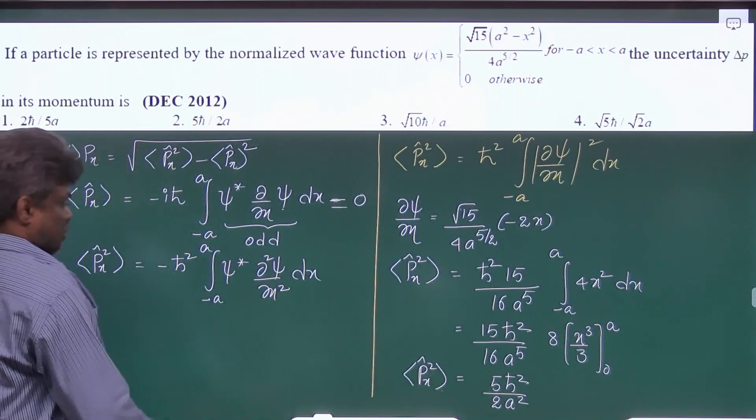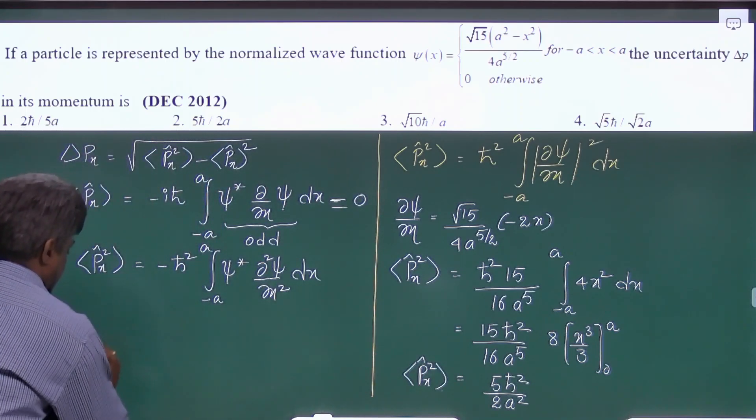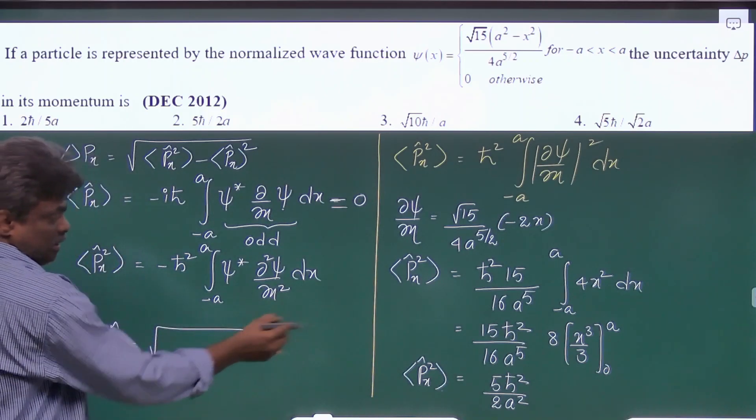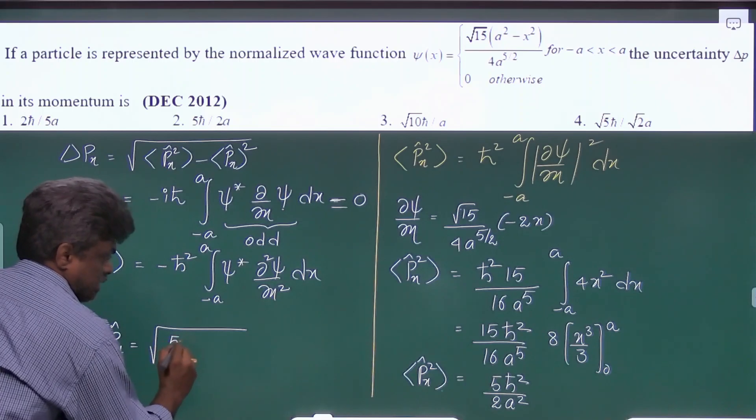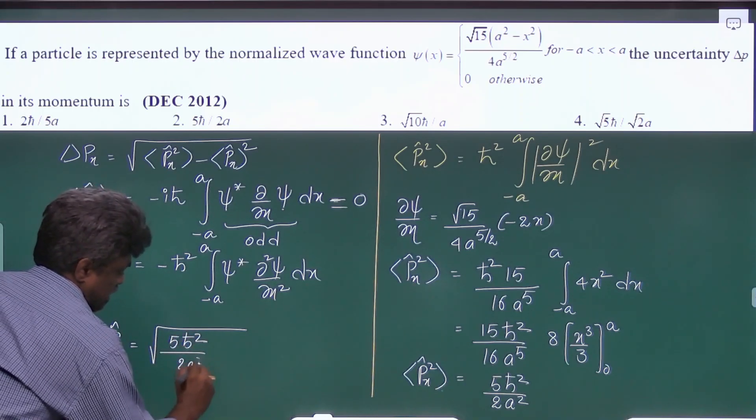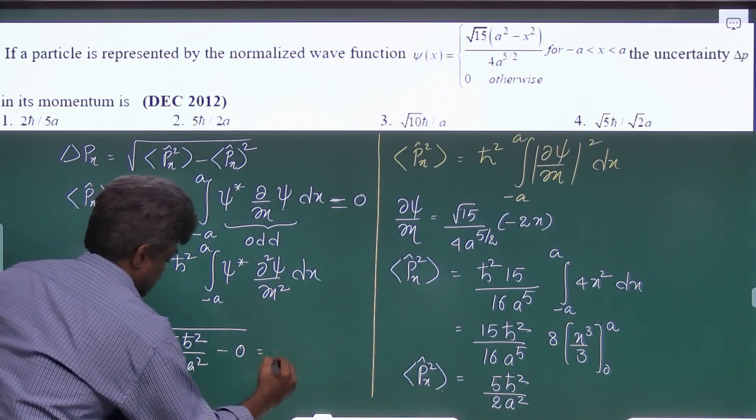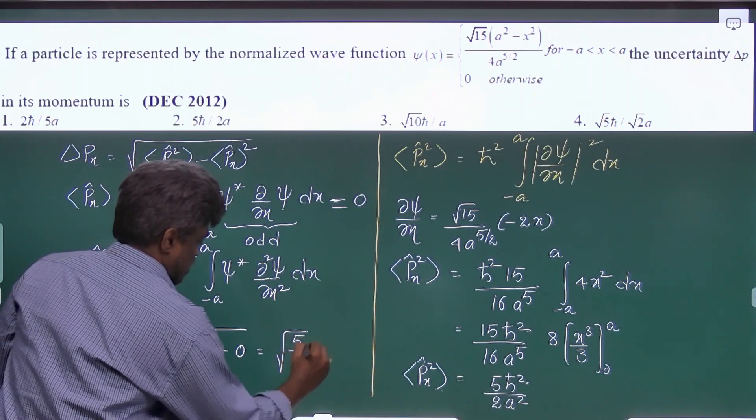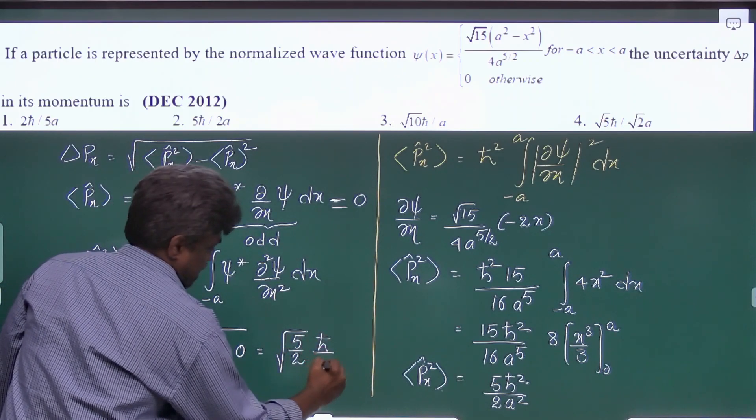So now once you got this value you can find delta px is equal to under root px square that is 5 h cross square by 2 a square minus 0. So final answer under root 5 by 2 h cross by a.